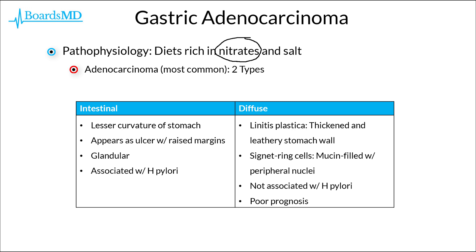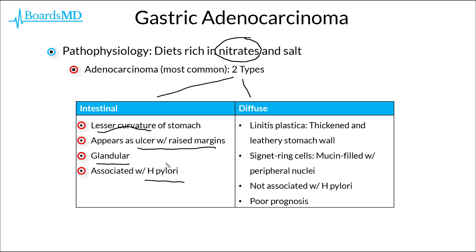Gastric adenocarcinoma has two key subtypes: the intestinal and the diffuse subtypes. The intestinal subtype really likes to affect the lesser curvature of the stomach and classically presents as an ulcer with raised margins on that lesser curvature. Biopsies will show a glandular histopathology. It must also be noted that this intestinal subtype has a strong association with H. pylori, and therefore patients may present with signs and symptoms of H. pylori infection prior to the development of this intestinal adenocarcinoma.